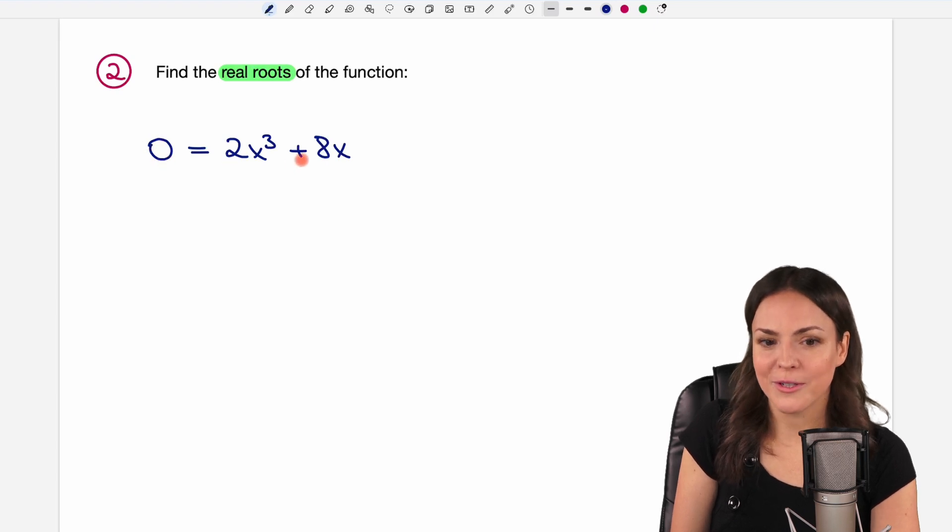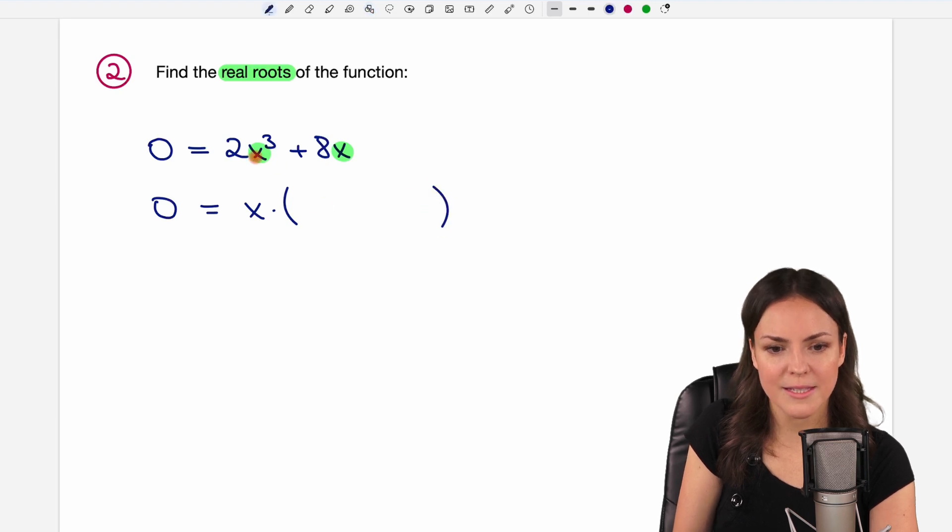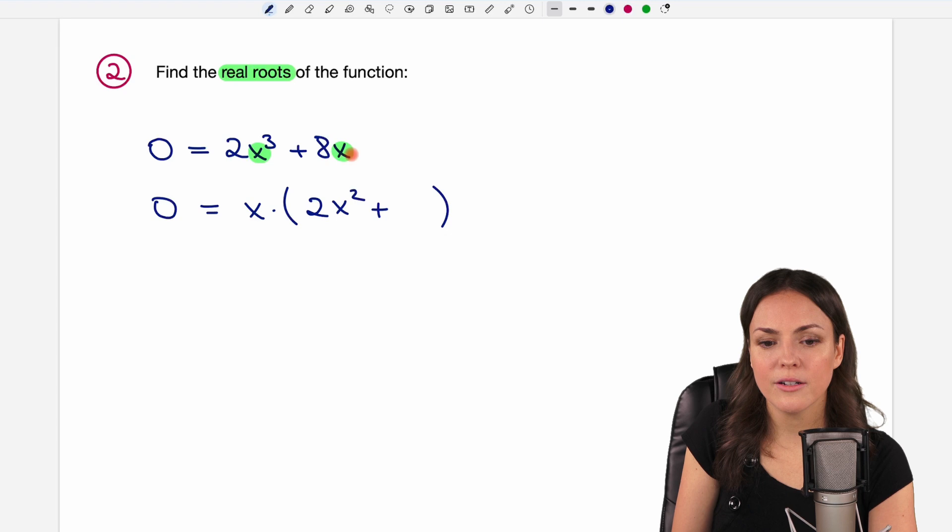So we take this function and set it to zero. And we've learned that we can extract x out of this sum here to get a product. So we do that, extracting x. What is left in the parentheses? If we extract one of those three x's we have in here, we have 2x to the power of 2, because we extracted one of them, plus, and here if we extract this one x, only the 8 is left in here.